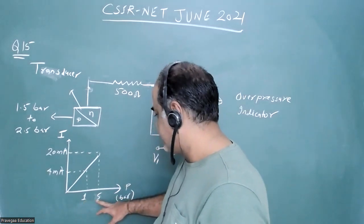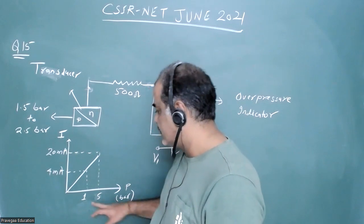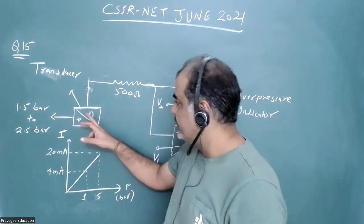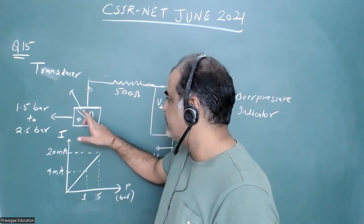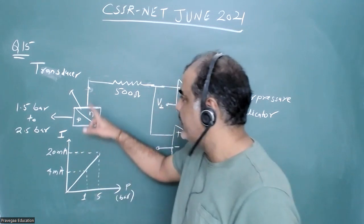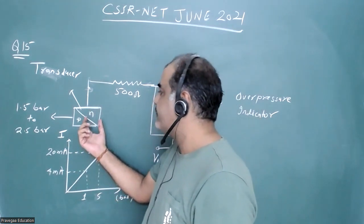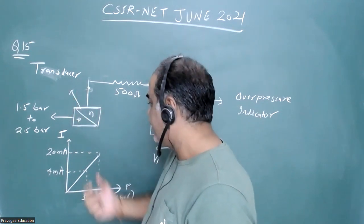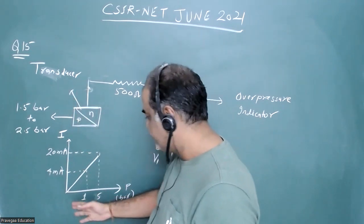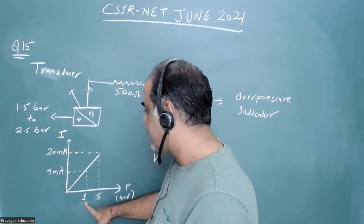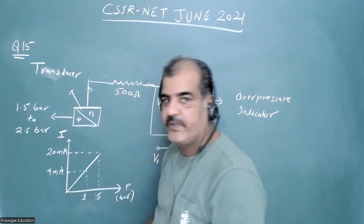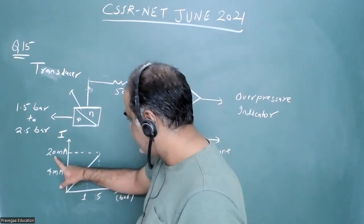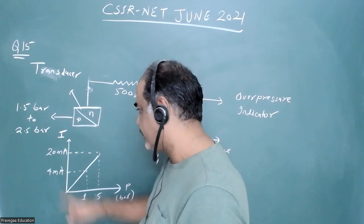It is also given that for a 1 to 5 bar range, the output of this transducer — a device which converts pressure signals into electric signals — gives us a current. When the pressure is 1 bar, the output of this transducer is 4 milliampere, and when the pressure is 5 bar, the output is 20 milliampere.